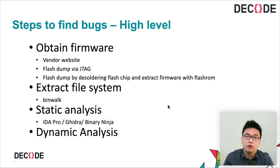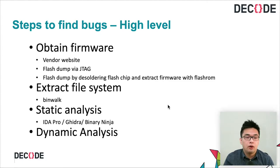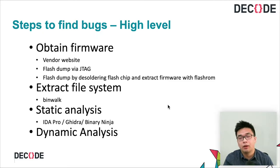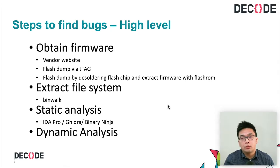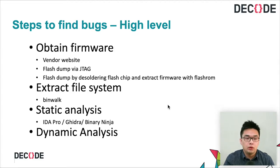If the firmware isn't available online, you have to go through the hardware route by reading the flash chip directly via JTAG, or interacting with the flash chip directly by desoldering it and using a flash ROM reader to read out the firmware. With the firmware extracted or downloaded, we need to extract the file system to analyze the programs. We can use binwalk for that, and there are plenty of articles online explaining how.